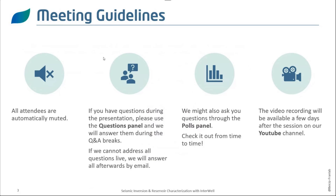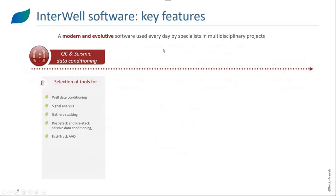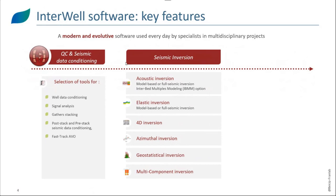Our software Interval is used for seismic inversion and reservoir characterization. The first step of this process is QC of well data and seismic data. This involves well data conditioning, QC of seismic data for extracting the signal, conditioning of gathers, conditioning of post and pre-stack seismic data, and AVO study. For seismic inversion, we have several offers depending on the type of data and the goal for reservoir characterization. In today's session, we will focus on the acoustic model-based inversion and the option for interbed multiples modeling.